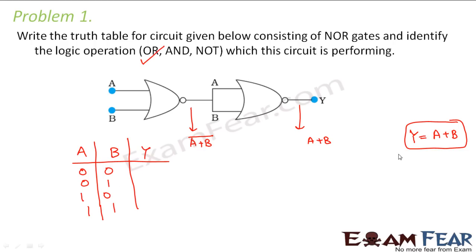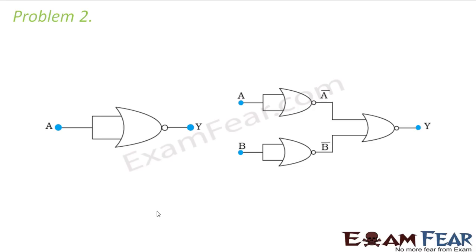So your output truth table will be 0, 1, 1, 1. So let us look at the next problem.